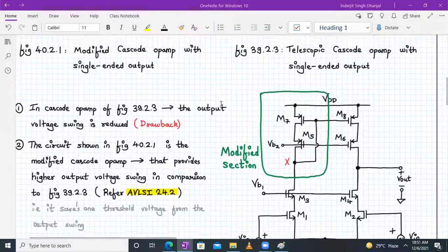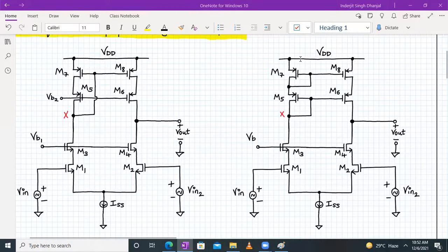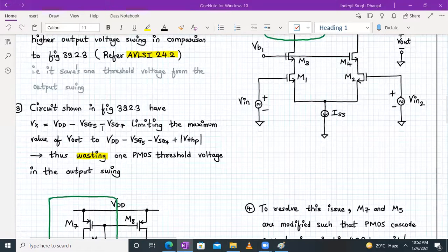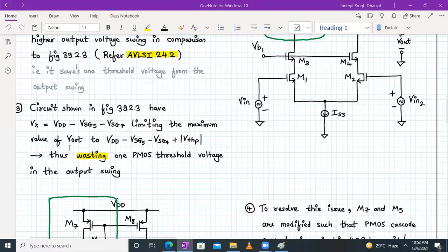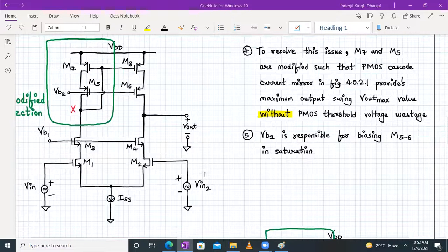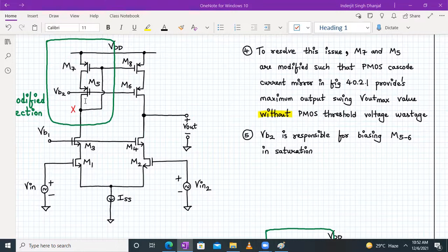The circuit shown in Figure 39.2.3, which is here, will have output voltage Vout max given by the voltage Vx minus VZ7, limiting the maximum output value to VDD minus VZ5 minus VZ7 plus threshold voltage for a PMOS. Therefore it was wasting one PMOS transistor threshold voltage in the output swing. To resolve this issue, M7 and M5 transistors are modified.